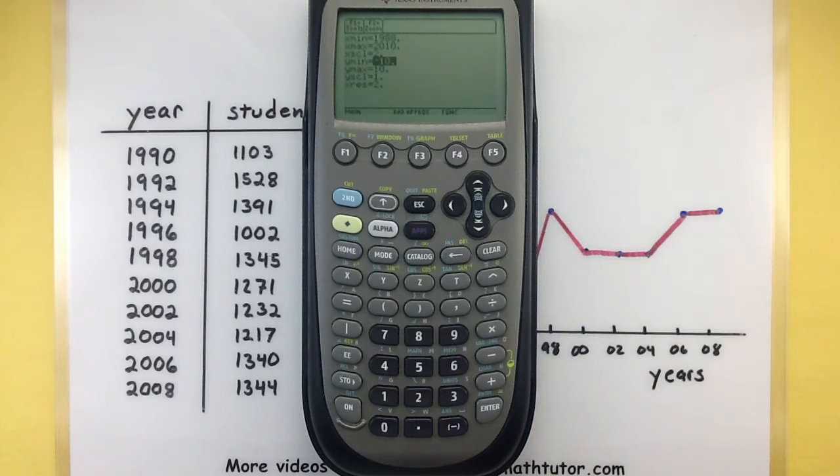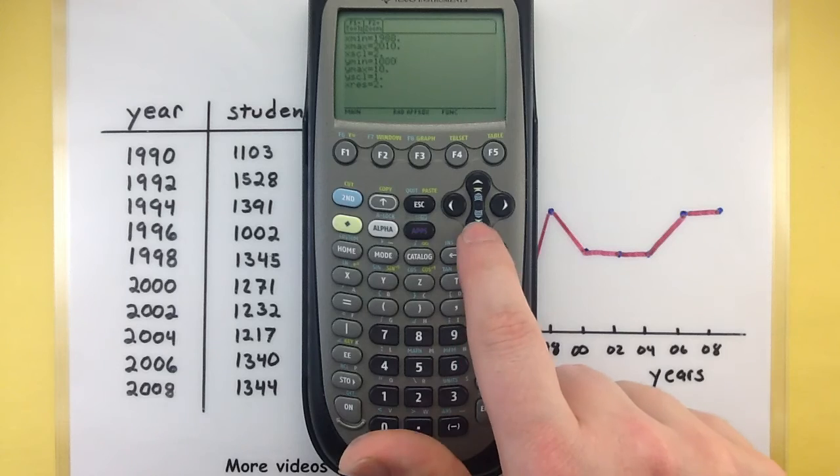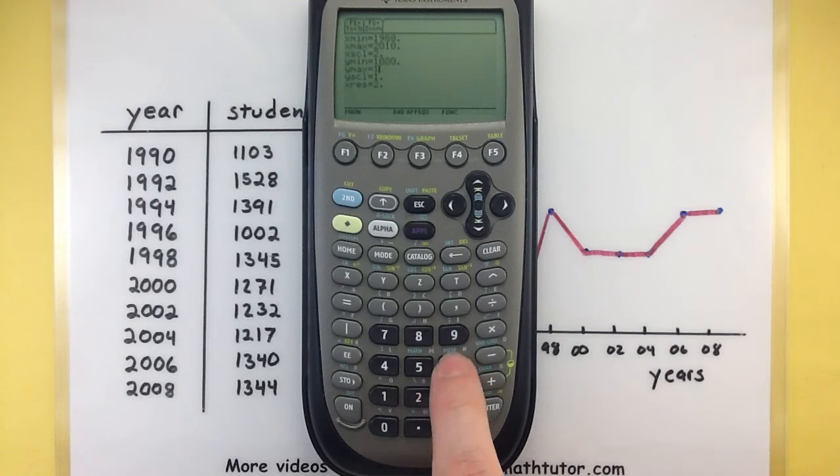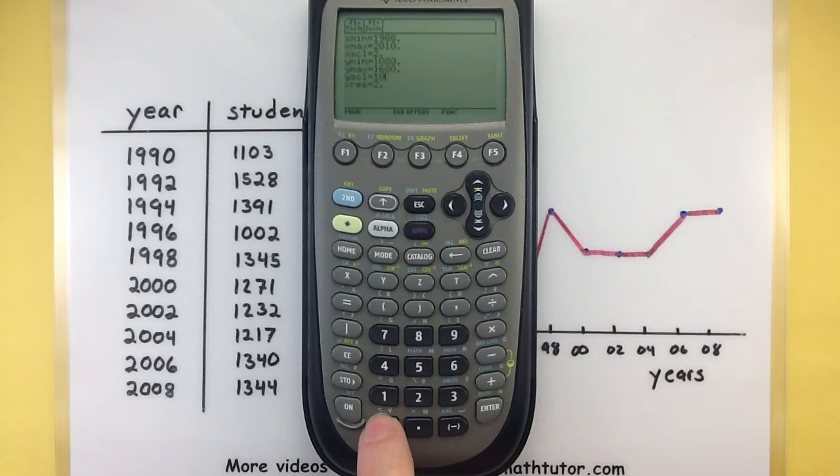Onto our Y values. Again, let's pick something smaller and larger than our actual data. All of the data over here, they're all definitely over 1000, but the largest one on here is 1528. So let's set the minimum value to be 1000, and the maximum value to be 1600. That should be perfect. Now let's see, what shall we use for a scale? Let's go ahead and throw 100 in there. So now that our window is set, we already have our plots and our data is in there.